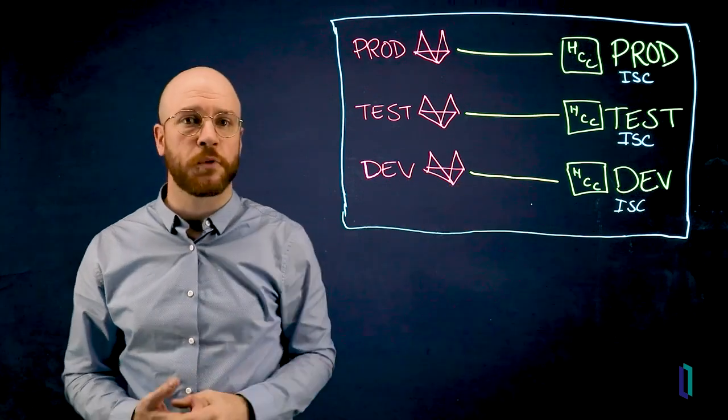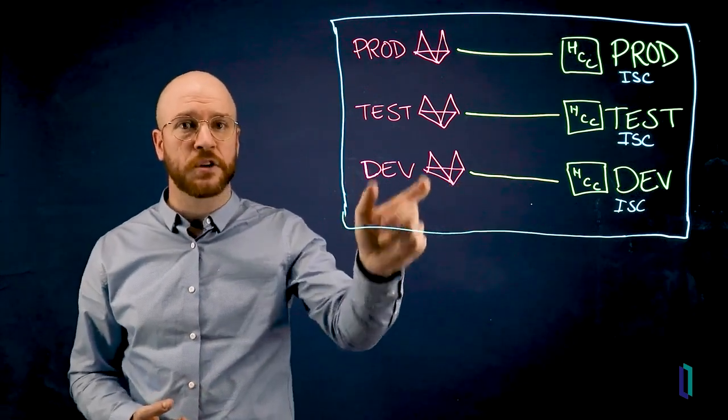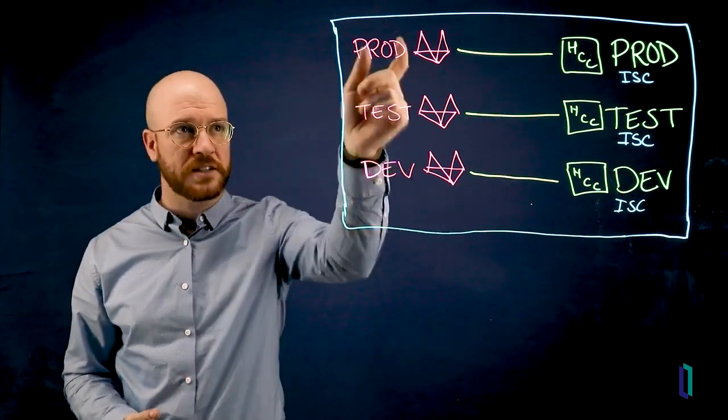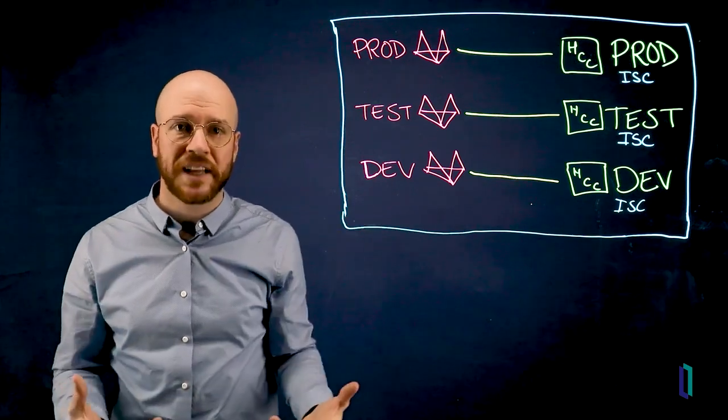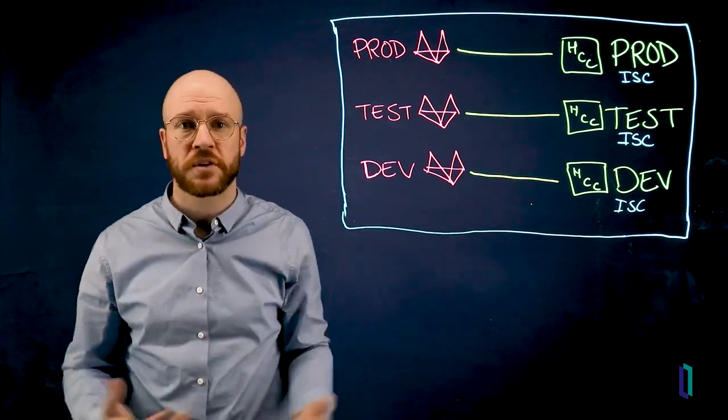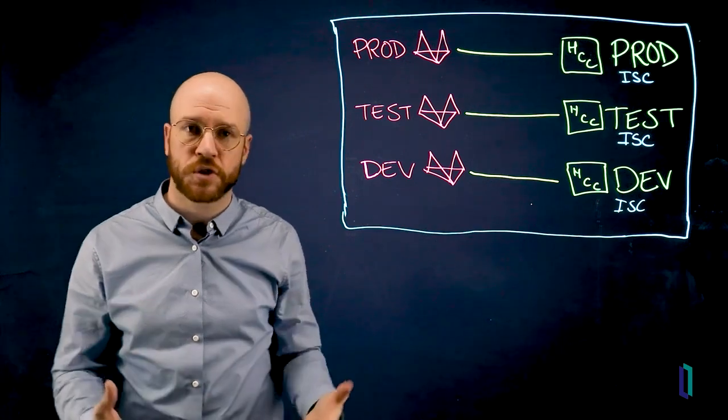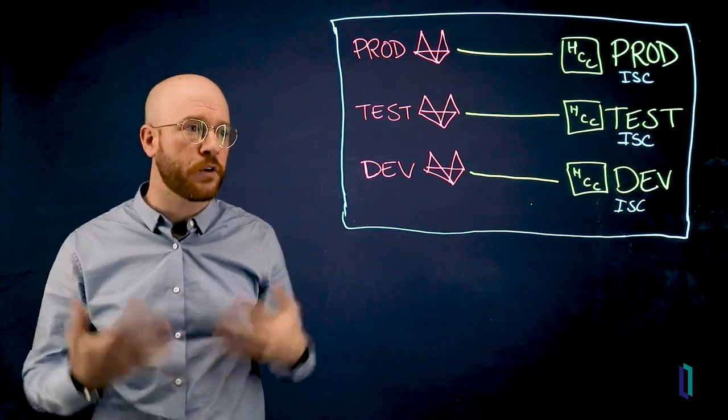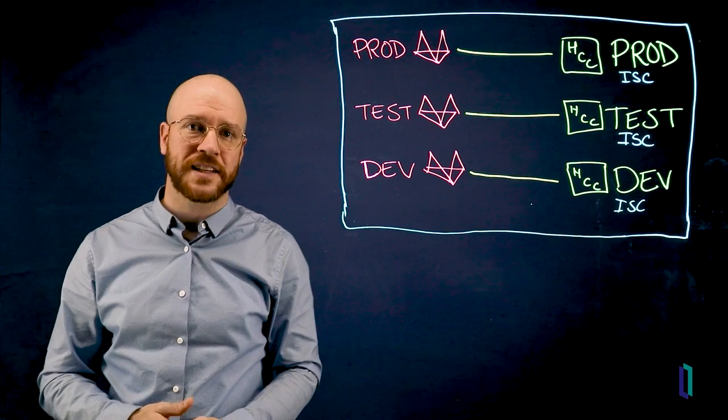Associated with each of those deployments, you have a specific branch in your GitLab repository: dev, test, and production. The overall GitLab repository comes with your HealthConnect Cloud deployment. It's the tool that's used for source control, for change control, for CI/CD pipelines, and things like that.